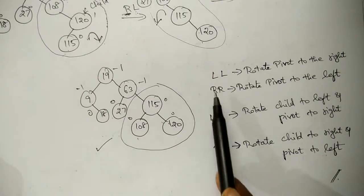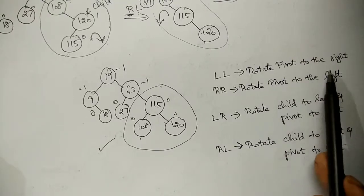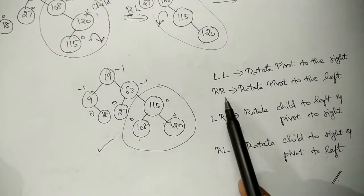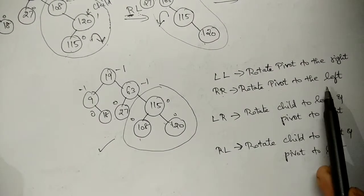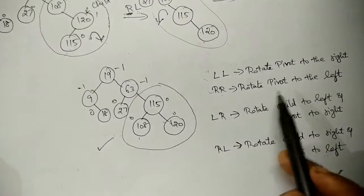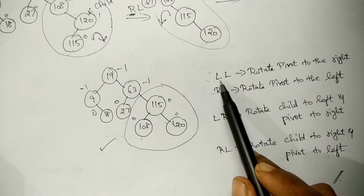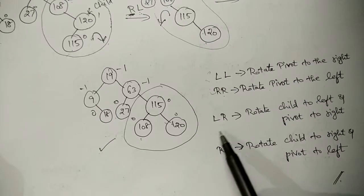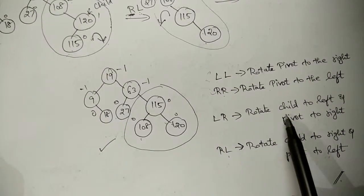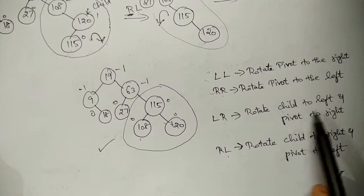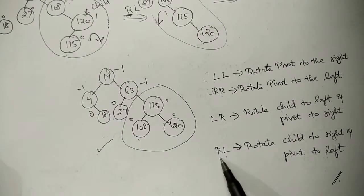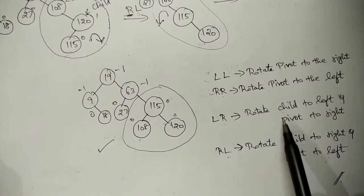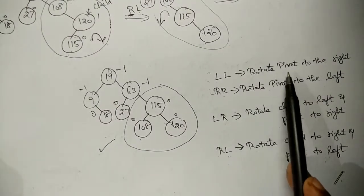We have seen four types of rotations. In LL rotation, the pivot node is rotated to the right side. In RR rotation, the pivot node is rotated to the left side. These two come under single rotation — only the pivot node is rotated once based on the direction. The other scenario is LR and RL rotation, which come under double rotation — rotation is performed twice. For LR, the child is rotated to the left side and then the pivot is rotated to the right side. For RL, the child is rotated to the right side and then the pivot is rotated to the left side. In double rotation, always the child first, then the pivot. Thank you.